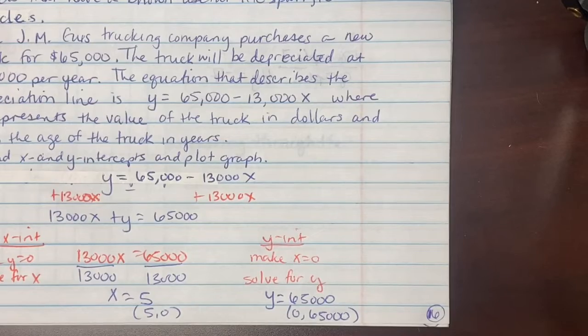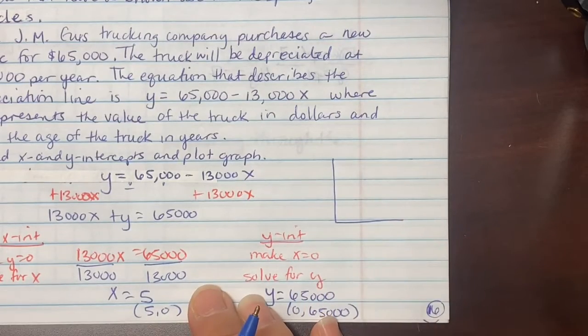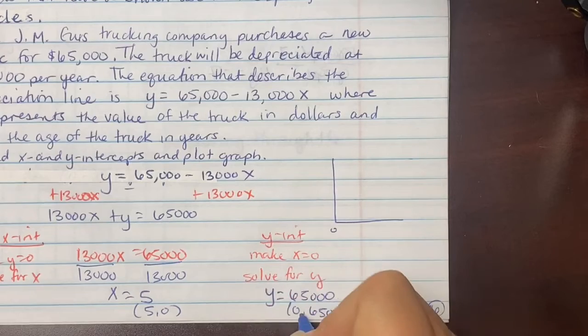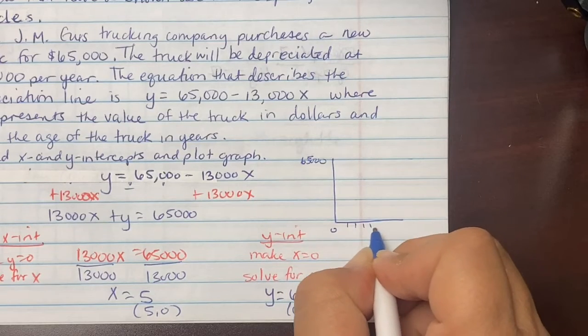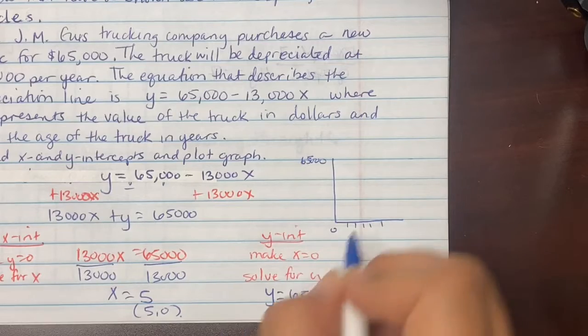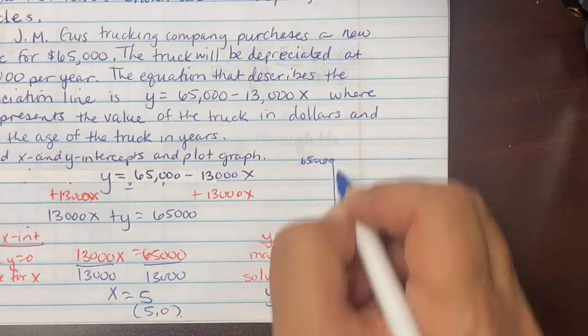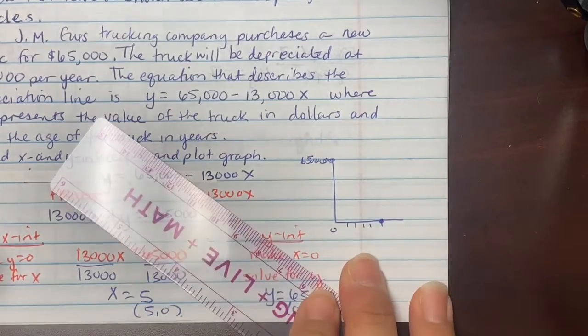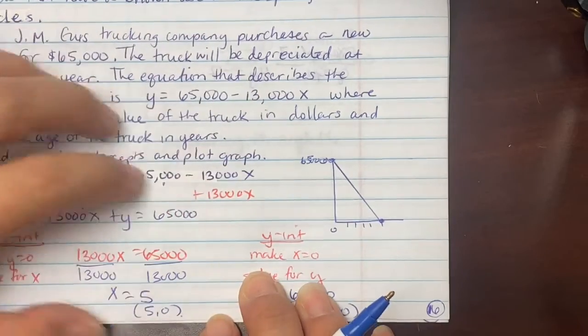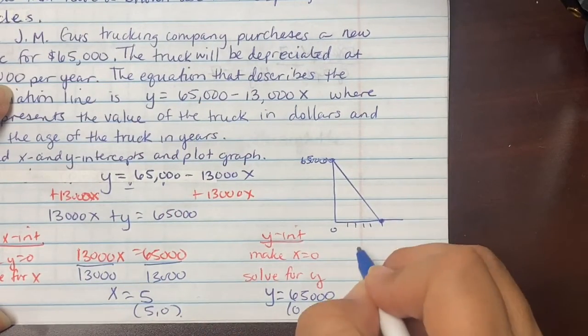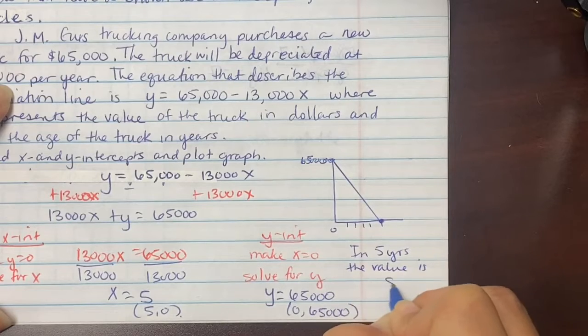Now to graph it, we're going to do a rough sketch. So when you're graphing depreciation, you're only in the first quadrant. So 0 is here. We're going to say we're starting up here at 65,000. And then you have your tick marks, your increments. And remember, we said 5. 5 represents the number of years. So in year 5, we hit our graph. And then at year 0, we're at 65,000. So we actually have a sloped line hitting 0. What does this mean? It means in 5 years, the value is 0.